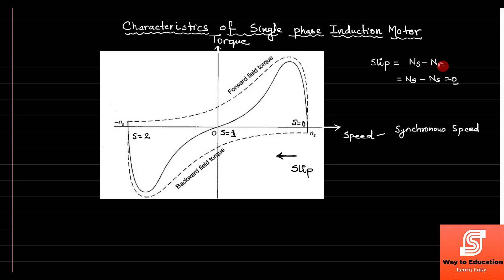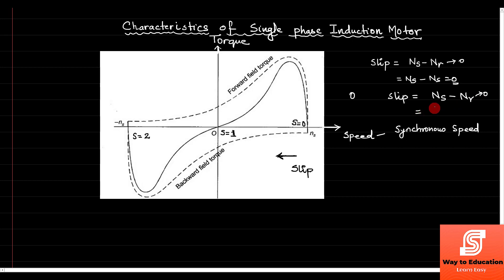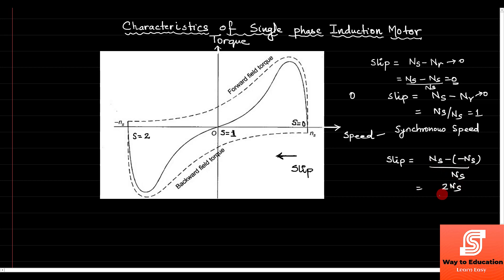If you can see, the starting torque is zero. The value of Nr at the starting point is equal to zero. So at this point slip equals Ns minus Nr, and since Nr is zero, slip equals Ns upon Ns which is equal to 1. Here you can see slip value equals 1. And if we see the backward torque side, the slip value is Ns minus minus Ns upon Ns, which comes out to be 2Ns upon Ns, so this value is equal to 2.